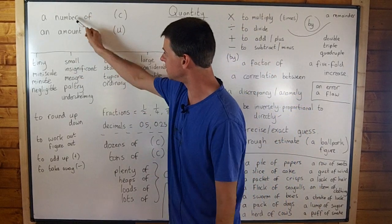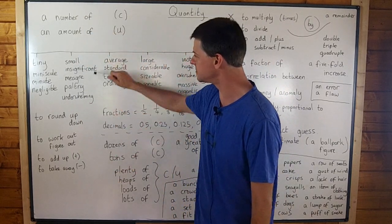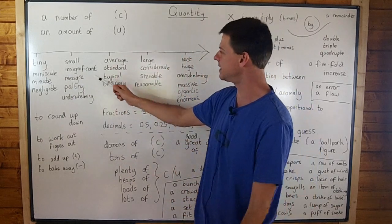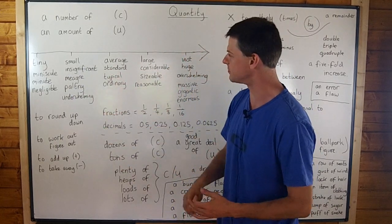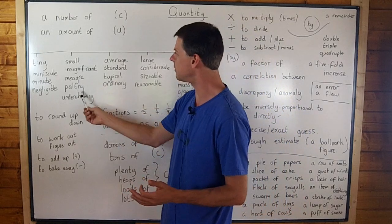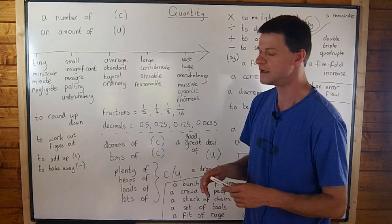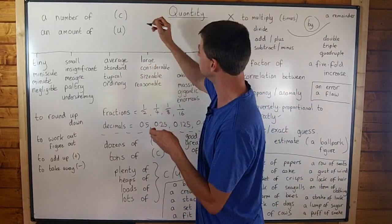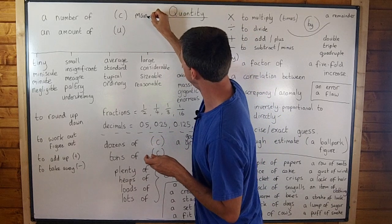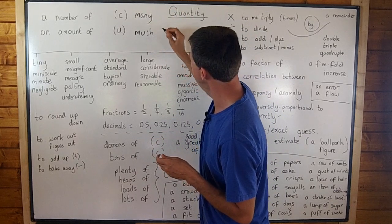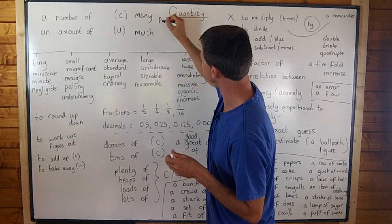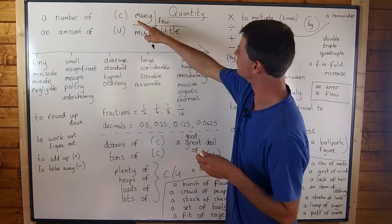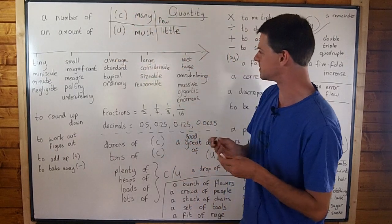So you could use all of these to modify number of amount. But if you want to make it a bit bigger, and that's the scale here, we're getting bigger as we go this way. You could say a small number of, an insignificant number of, a meager number of, a paltry number of, an underwhelming number of. And all of those would mean not many or not much depending on if we're doing countable many or uncountable much. And please remember that we use few with countable and little with uncountable as well. They're certainly worth remembering as well for countable and uncountable.